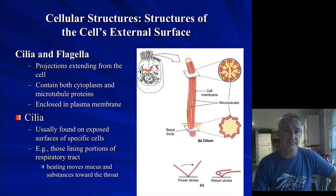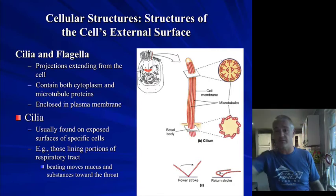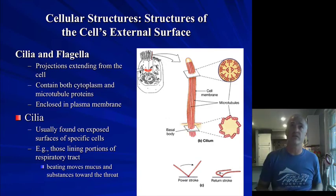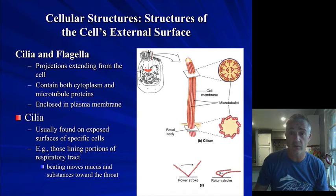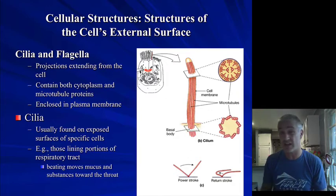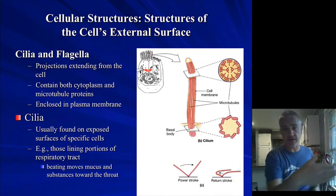Cilia are longer extensions found on a number of different cells — they are motile and do a movement that moves something across and then resets. I always use the analogy of crowd surfing: cilia move stuff past cells kind of like how hands move somebody throughout a crowd. Flagella is a single one that is usually a bit longer, looks more like a tail, and does a swimming motion — like an alligator's tail — which allows sperm cells to be motile.